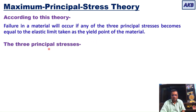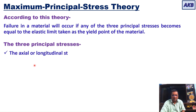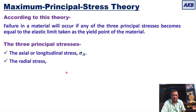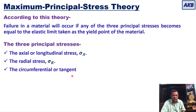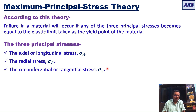The three principal stresses we are talking about are: the axial or longitudinal stress, that is sigma a; the radial stress, sigma r; and the circumferential or tangential stress, that is sigma c. I have discussed about these three stresses in my previous videos — I am giving a link to those videos, please watch them.